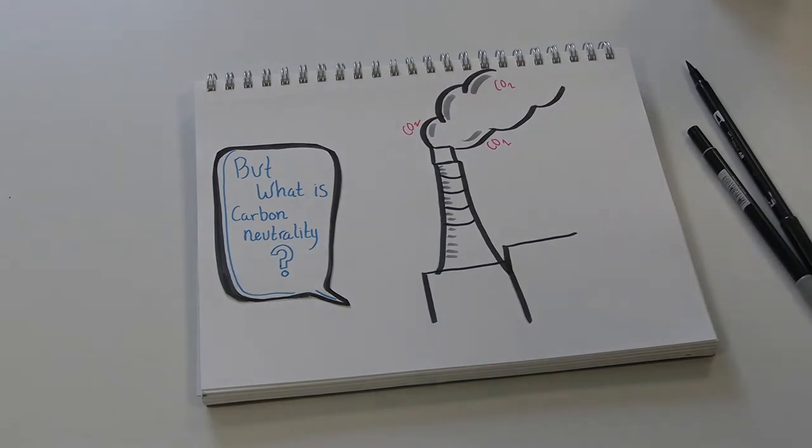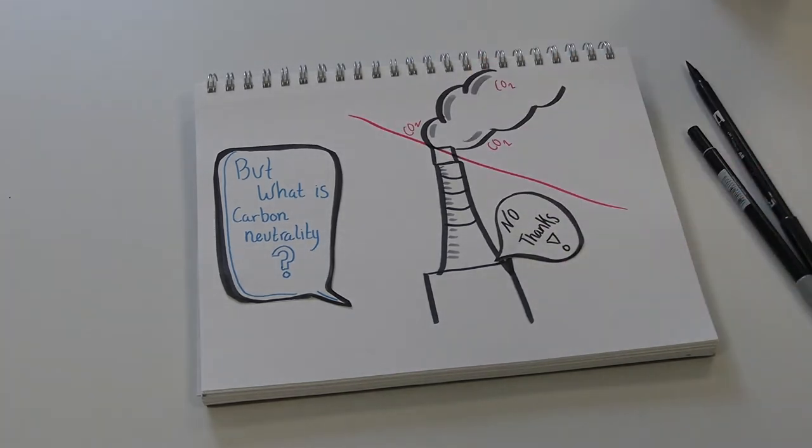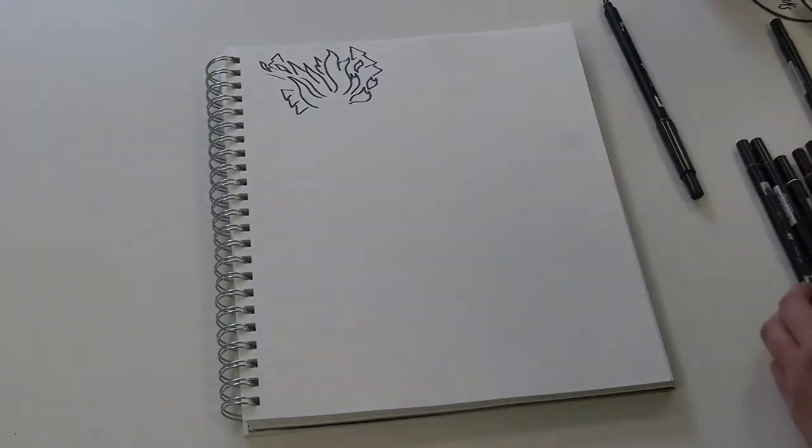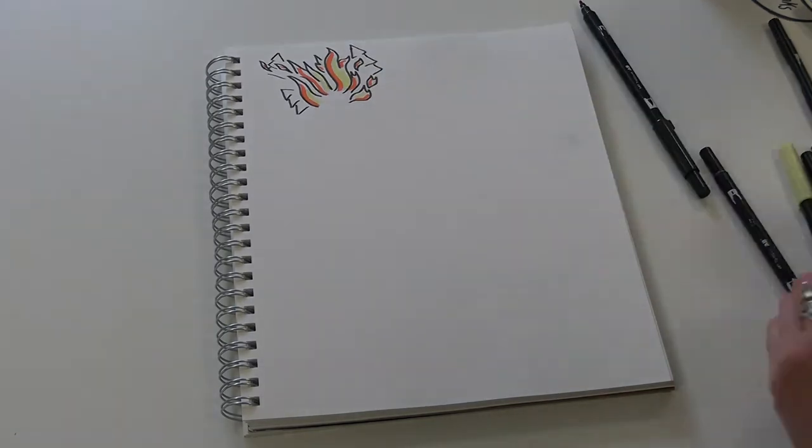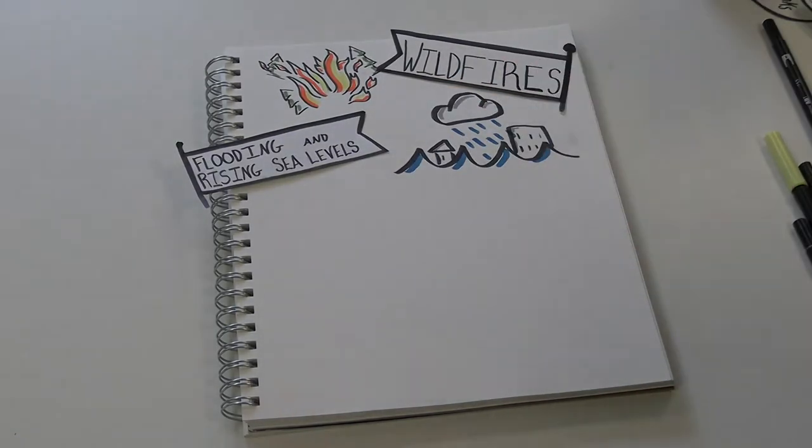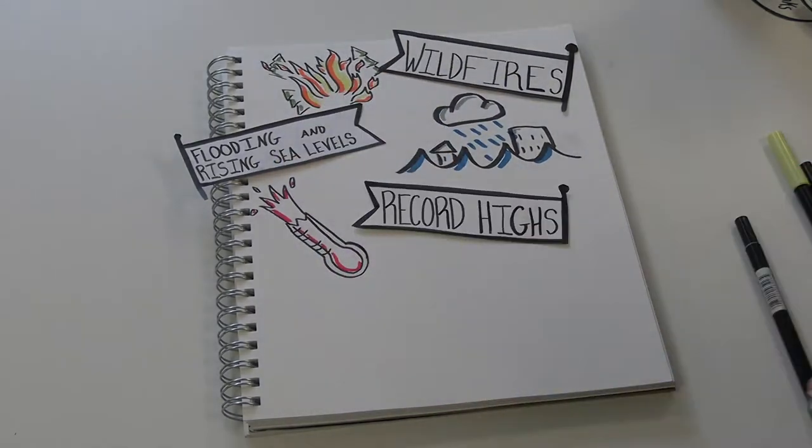These greenhouse gases warm the atmosphere and cause changes to our global climate. We already see the disastrous impact of climate change around the world, from raging wildfires to flooding and rising sea levels to record high temperatures and drought.